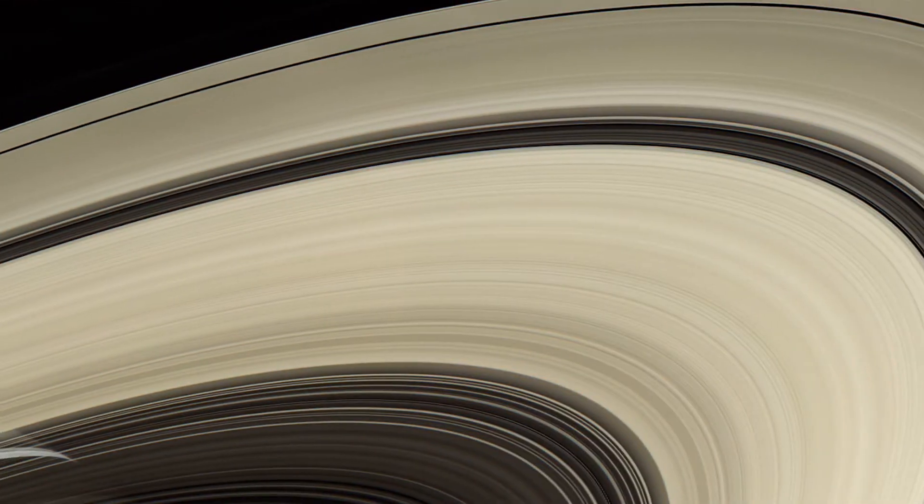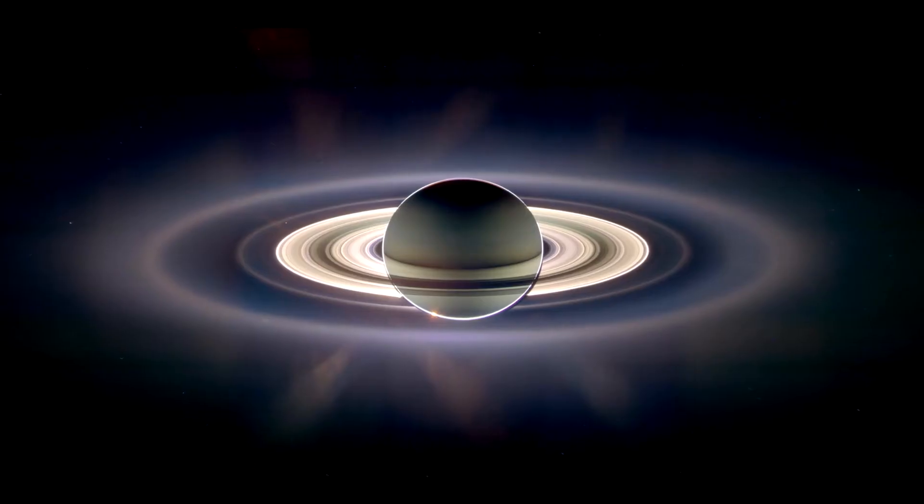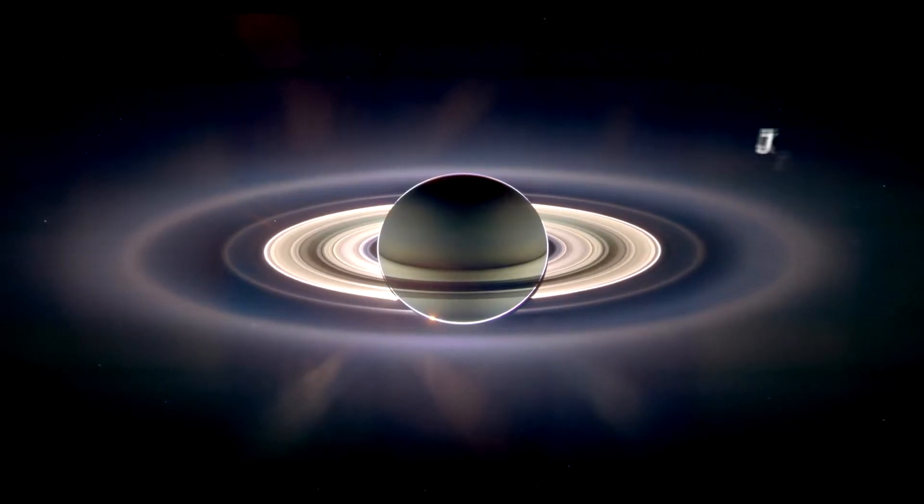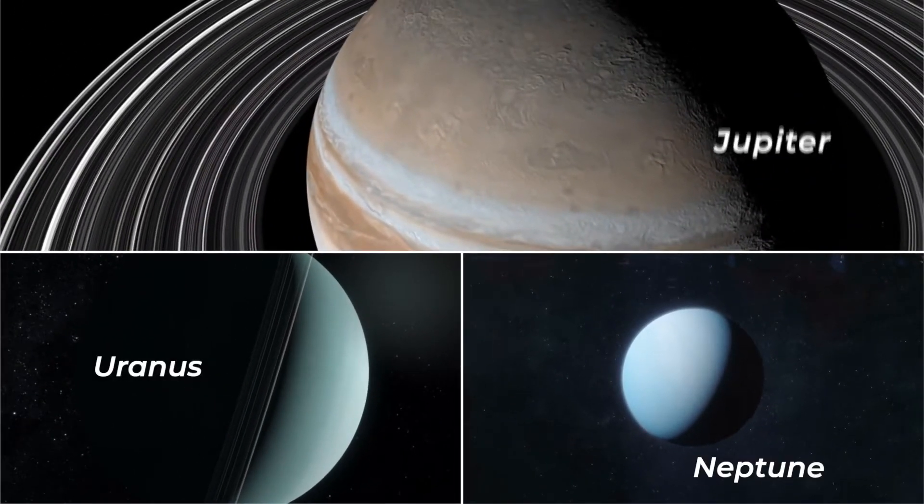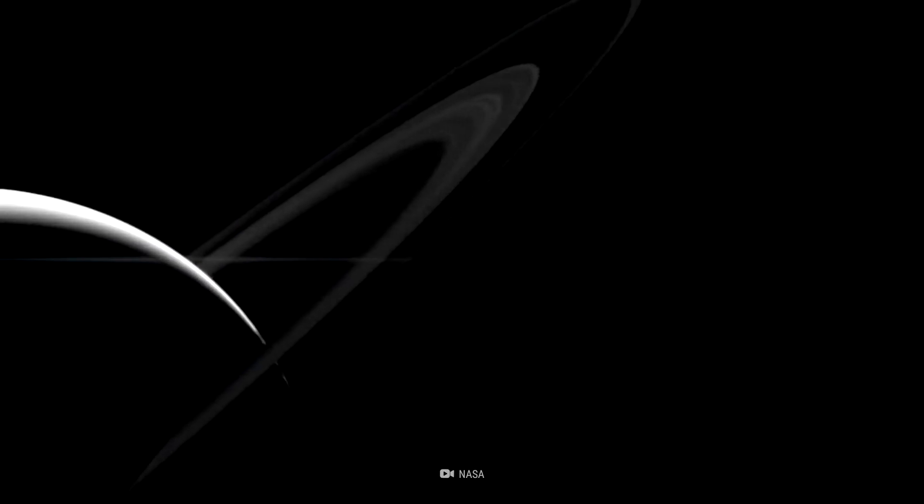These rings are made up of billions of chunks of ice, rock, and dust. Although they are nowhere near as big or bright, the other gas giant planets in the solar system—Jupiter, Uranus, and Neptune—are also encircled by their own systems of dusty rings.